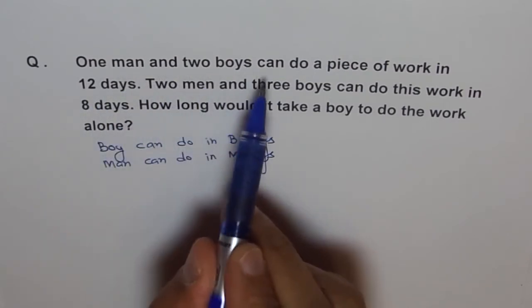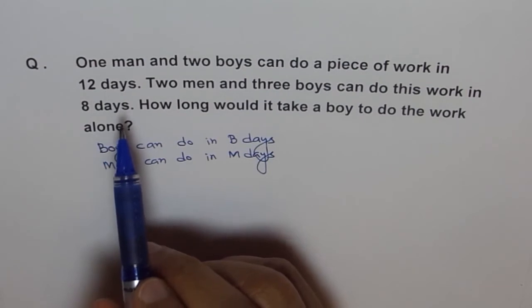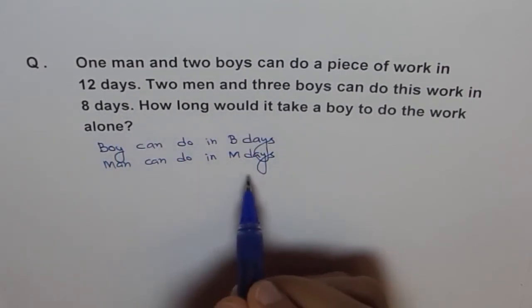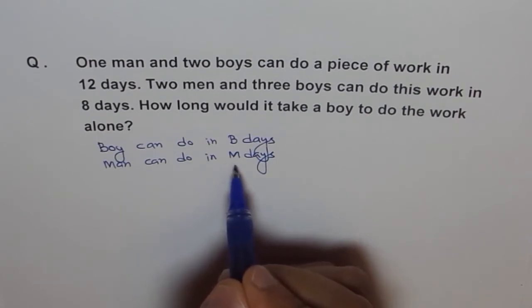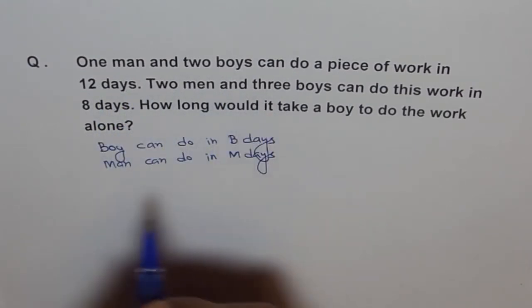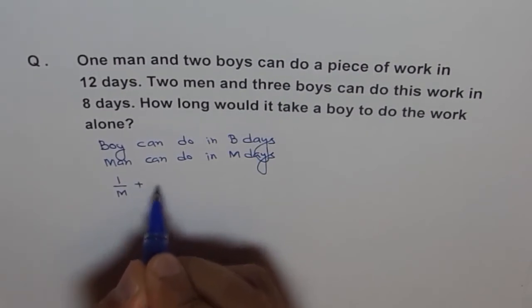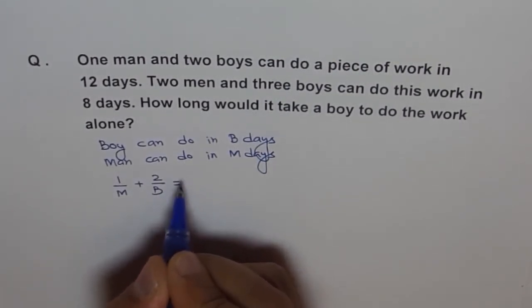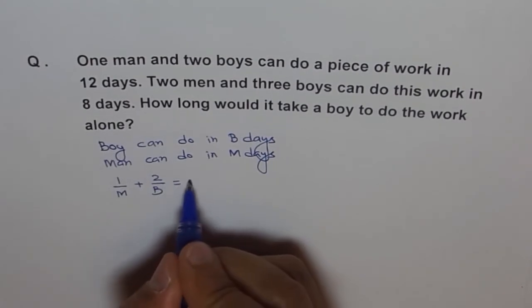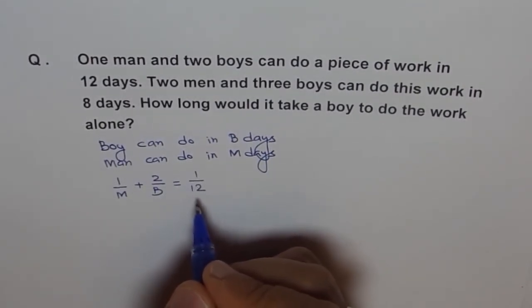One man and two boys can do a piece of work in 12 days. So we say in one day how much. If whole work can be done in M days, in one day a man will do 1 over M and one boy will do 1 over B. In first case we have one man and two boys. So in one day, one man, I will say 1 over M plus 2 over B equals to, they completed in 12 days, so it will be 1 over 12. So that is how we get our first equation.